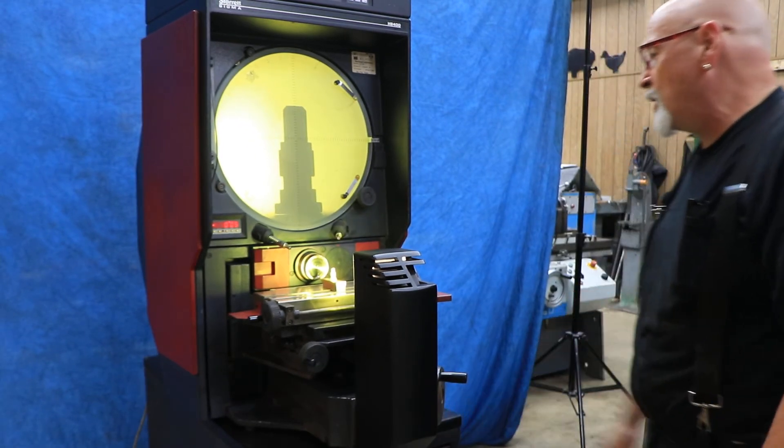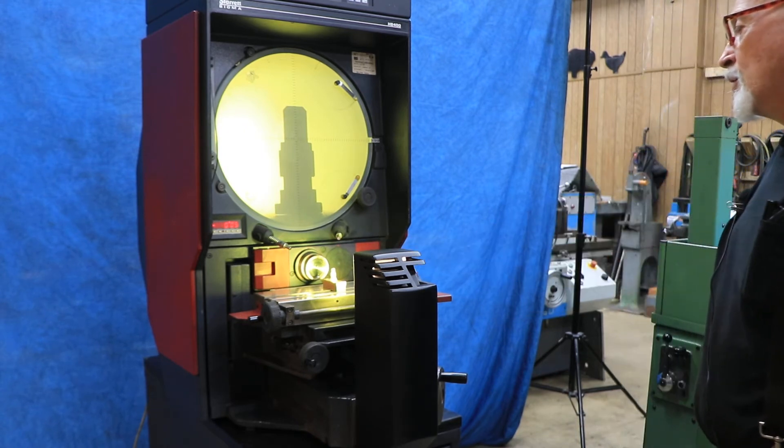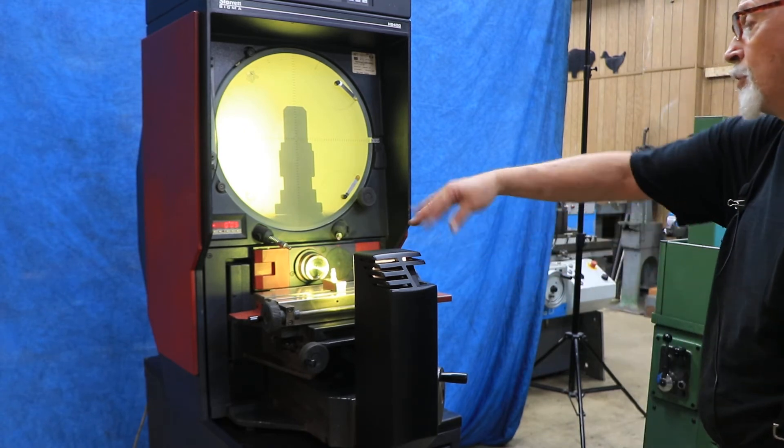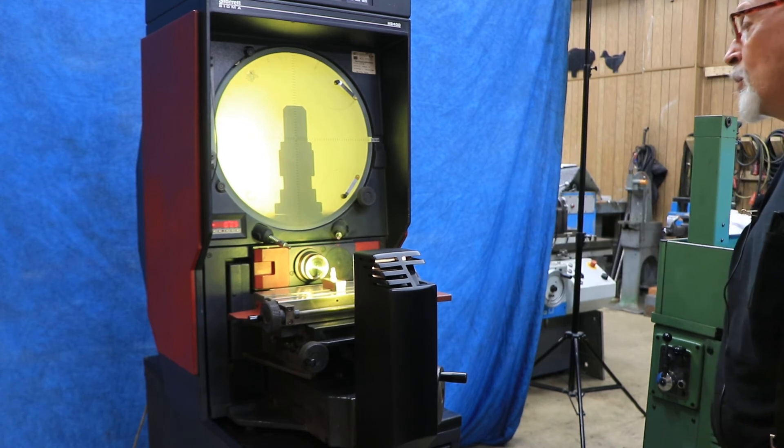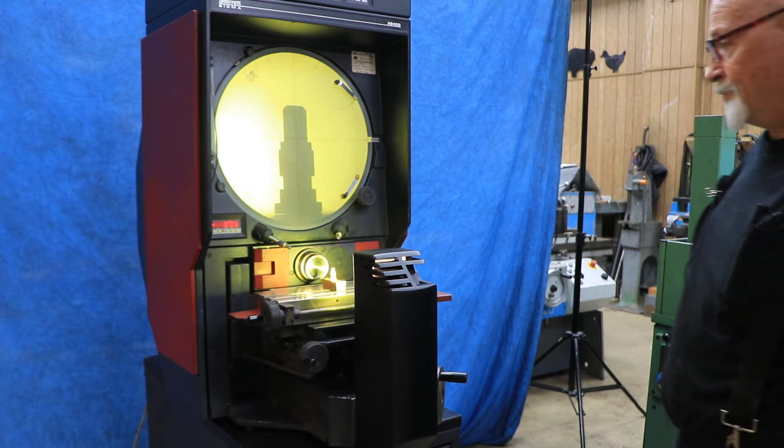It comes with the cabinet. There are a couple of pieces that go on the table here, a little vise, a protractor vise, whatever you want to call it. We'll have pictures of that.